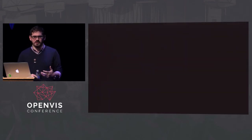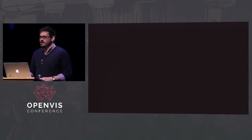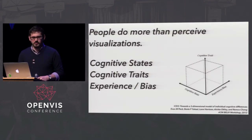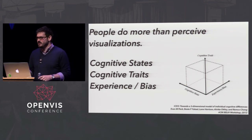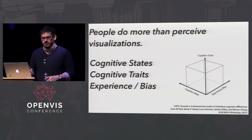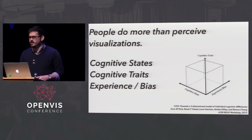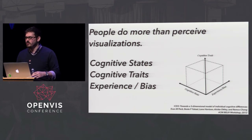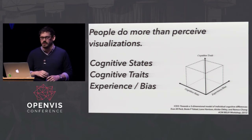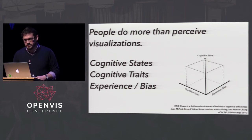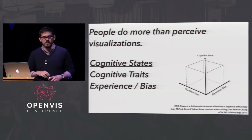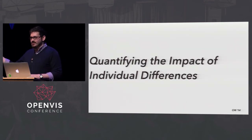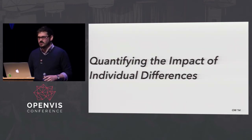That's just perception. People do a lot more than just perceive visualizations. You have to worry about things like cognitive states - what mental state are you in right now? And cognitive traits - things like personality, spatial ability, numeracy, experience, and bias - all things that might modulate the effectiveness of visualizations. I'll give you one more experiment that deals with cognitive states specifically, quantifying the impact of individual differences between users and how that impacts visualization design.